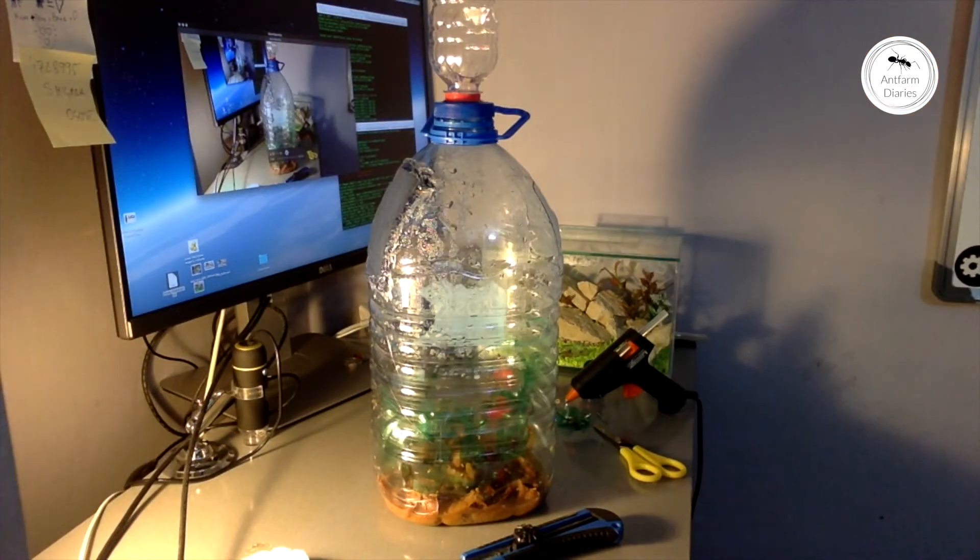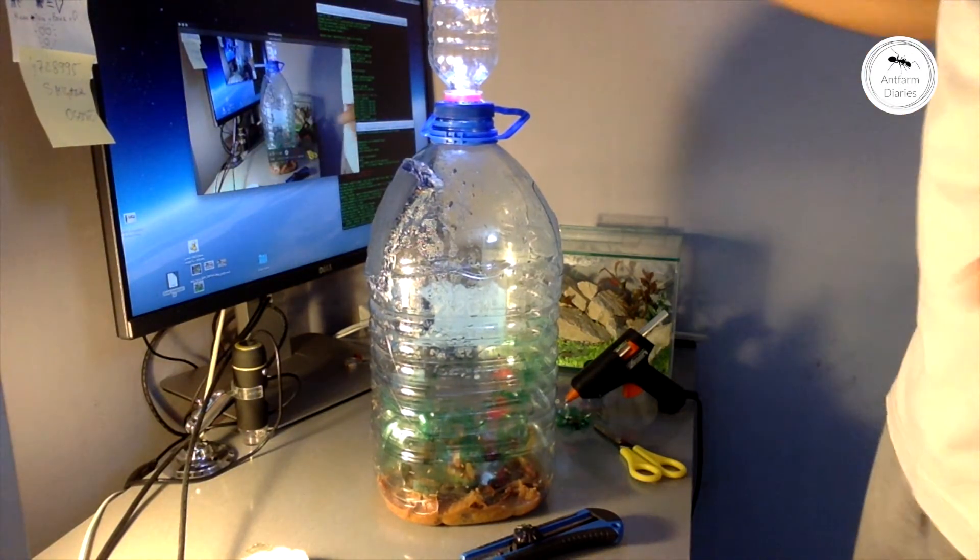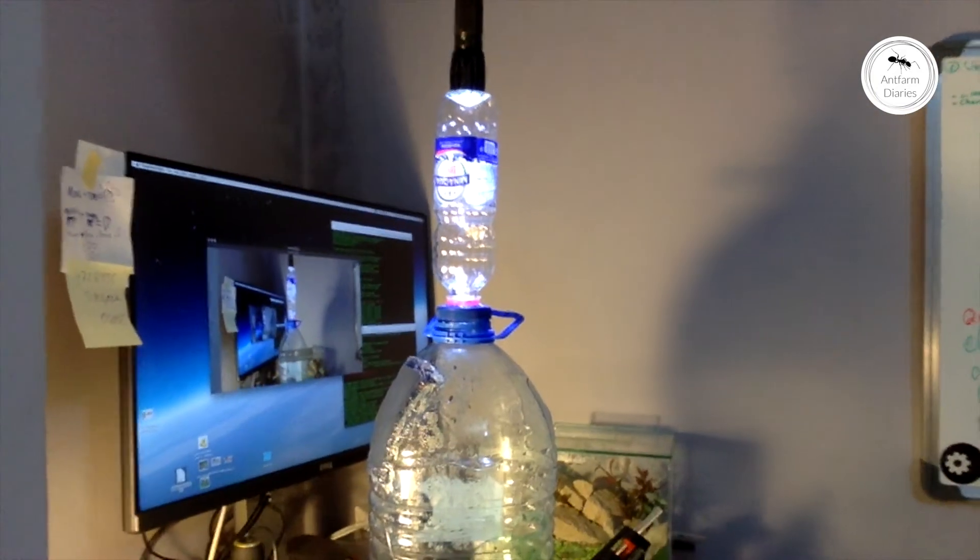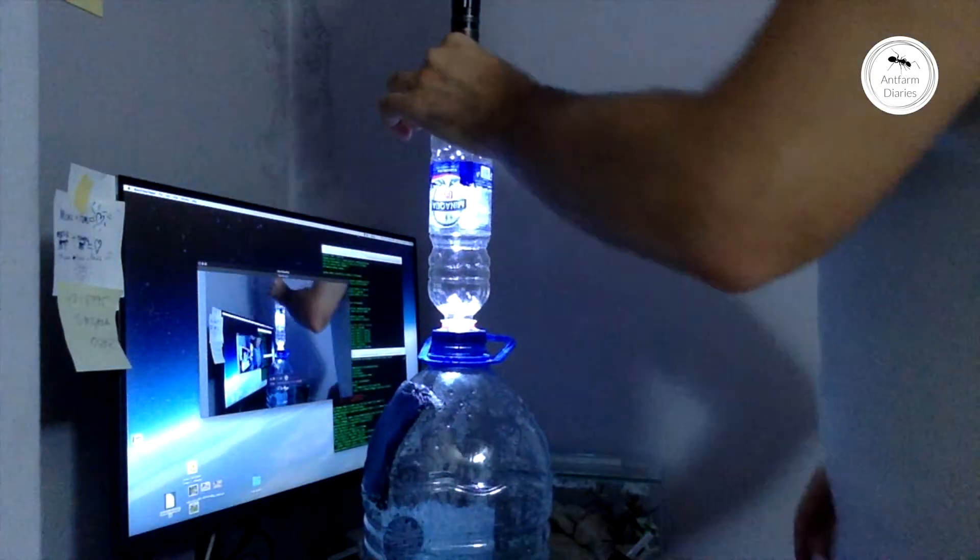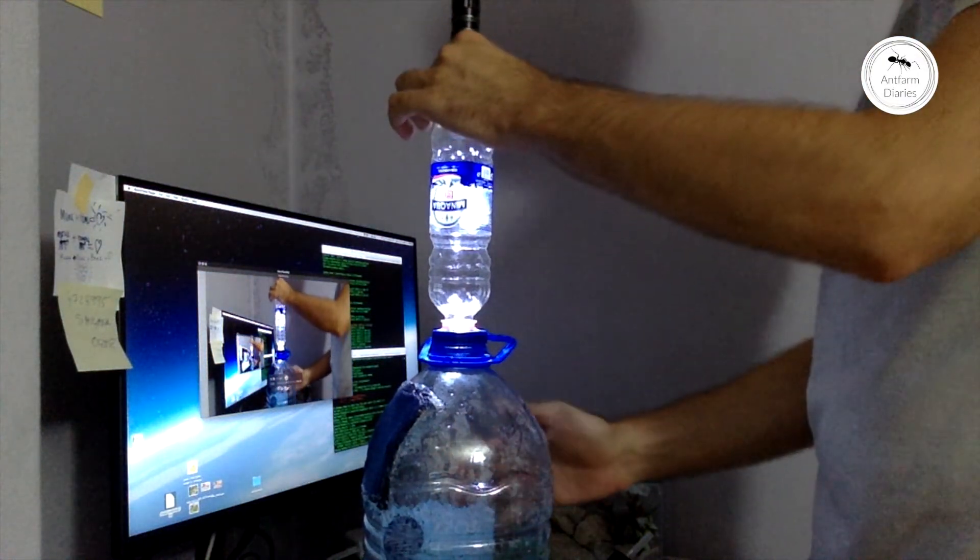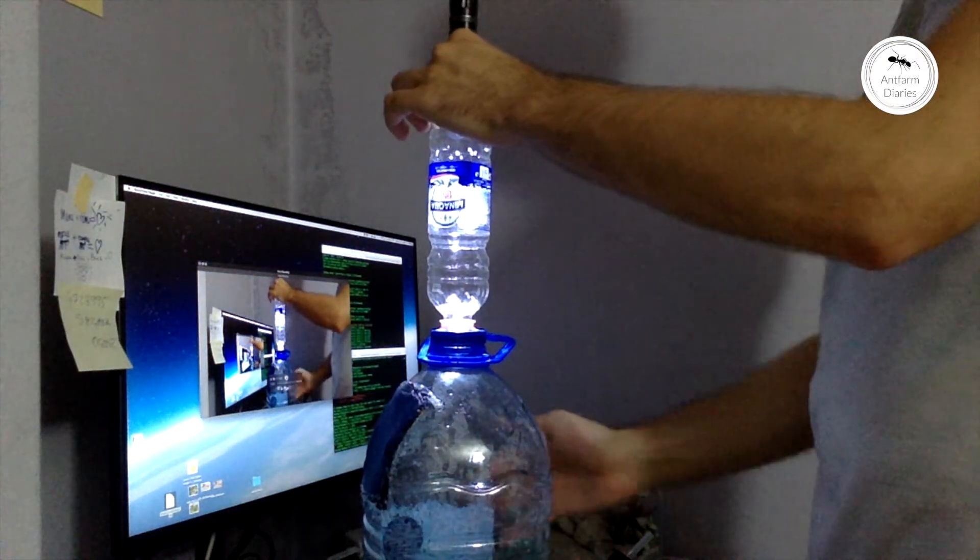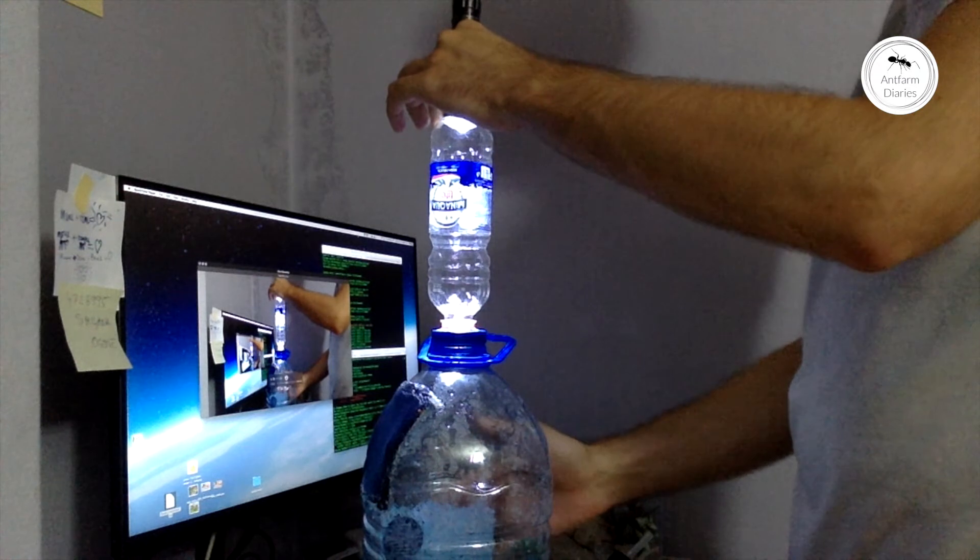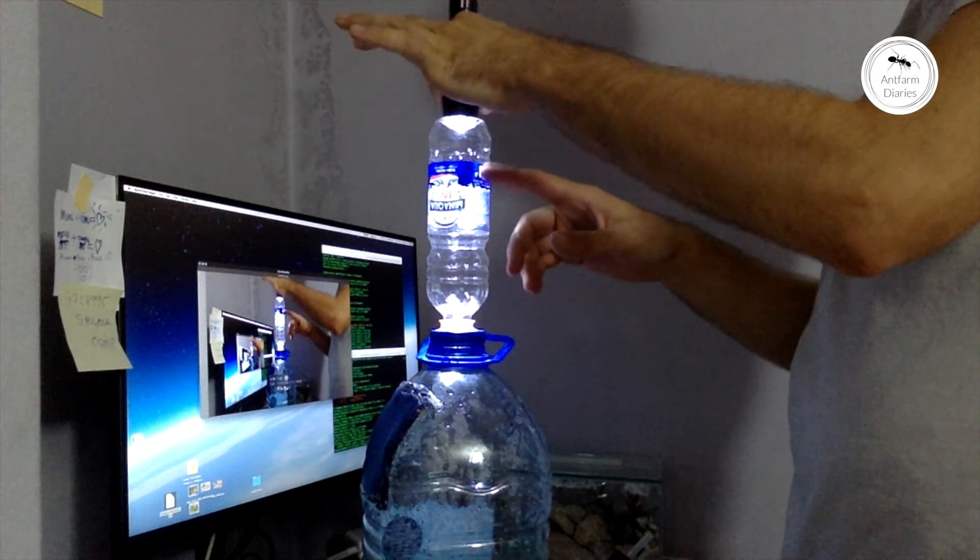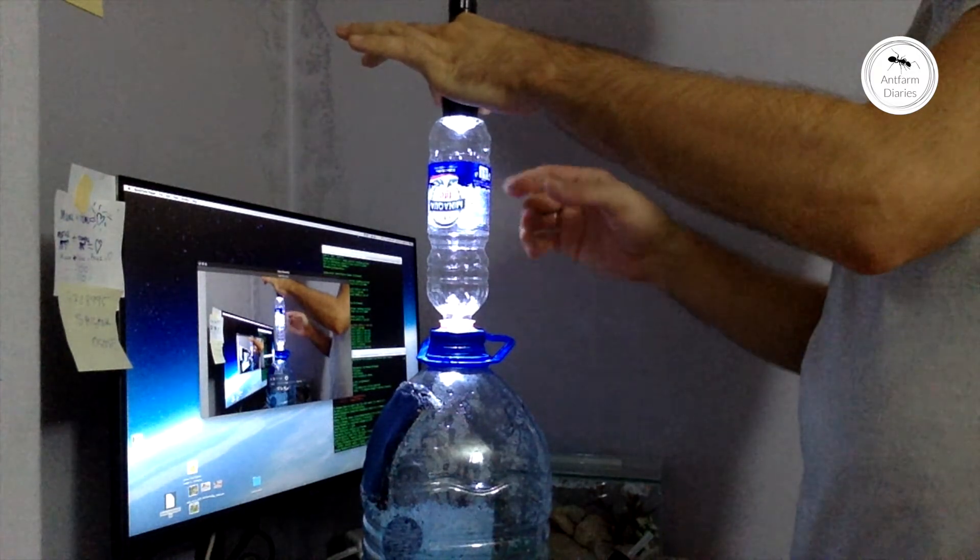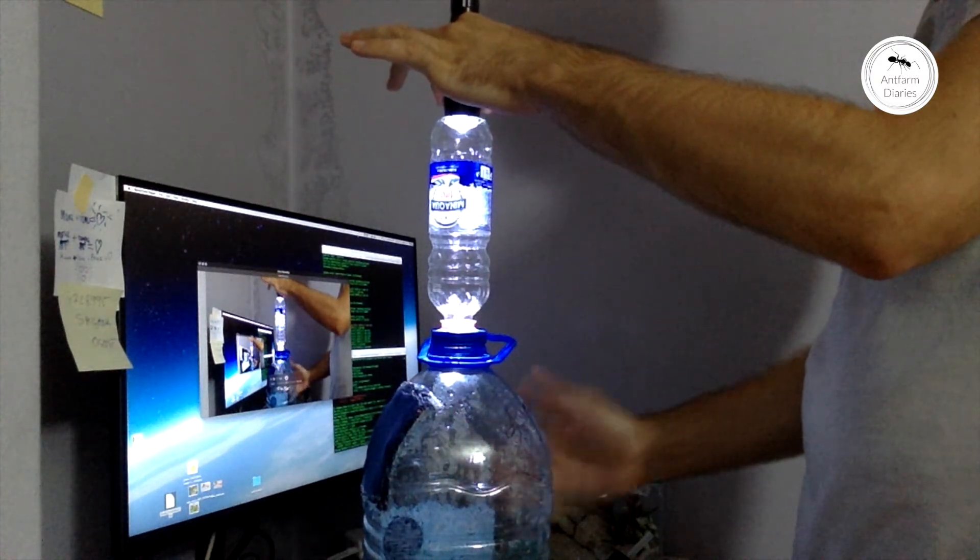Then you will need to take a flashlight and put the flashlight above the smaller bottle like so. Then you have to turn off the light or just go to a dark room and start tapping the bigger bottle, so the fruit flies will get scared and they will start flying up to the light.